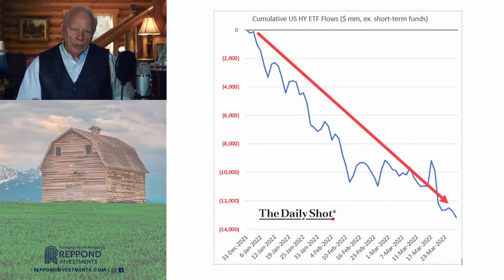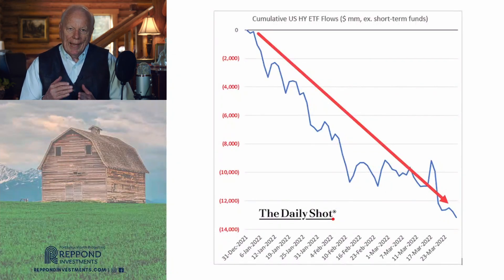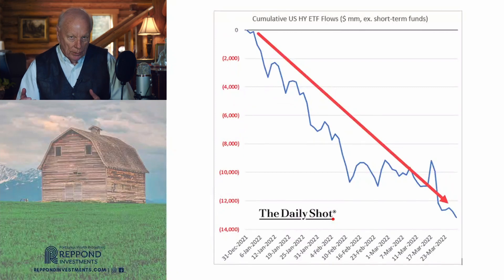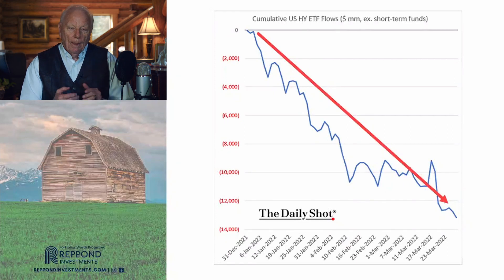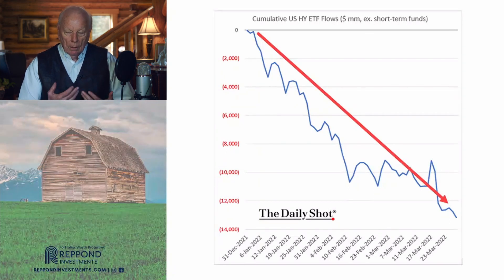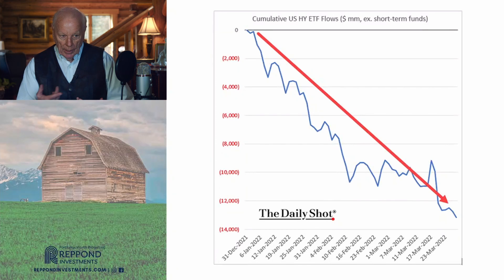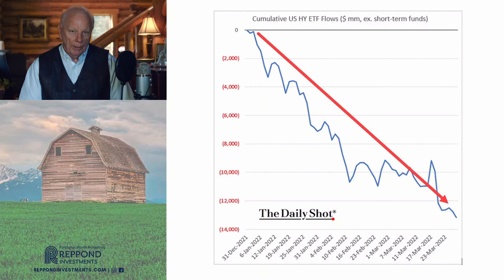This chart shows not the price of bonds, but the asset flow out of high-yield bonds. Since the beginning of 2022 — about three months ago — corporate and institutional money has been leaving high-yield bonds at a significant rate. They didn't get out because they're avoiding a three-month decline; they got out because they see more coming.